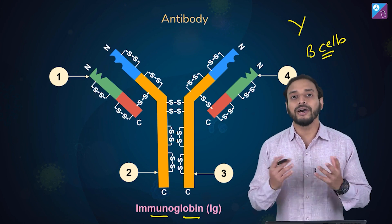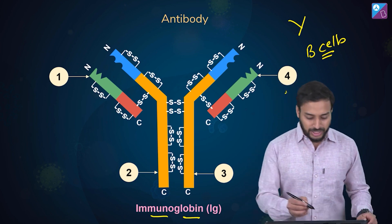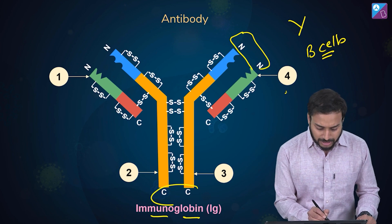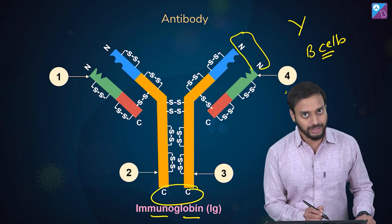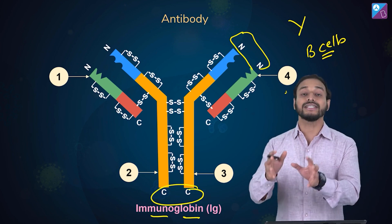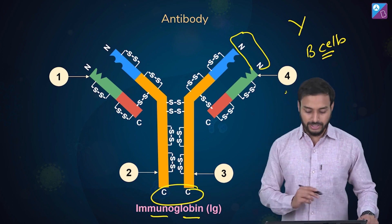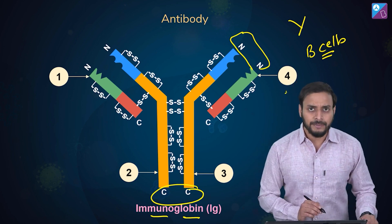These chains are made up of amino acids, so definitely they will have N-terminal and C-terminal regions. Since they are made of amino acids, that point is clear.